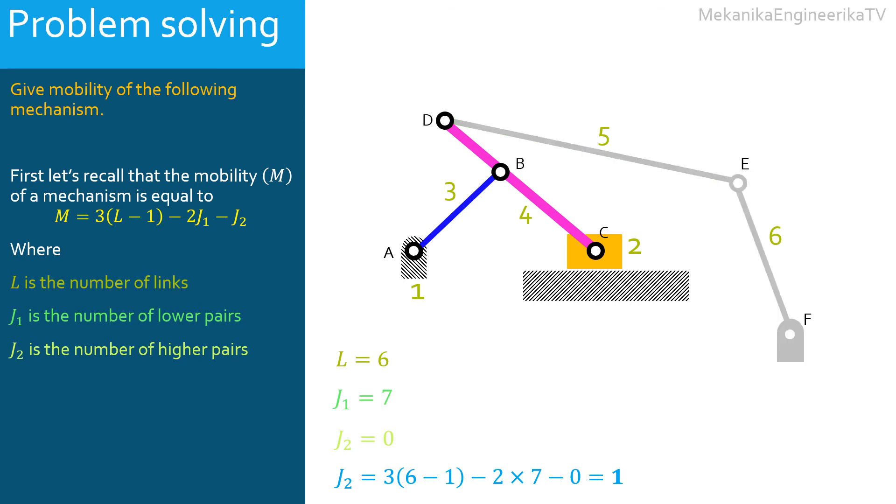The links 1, 2, 3 and 4 build a slider crank mechanism of which mobility is equal to 1.